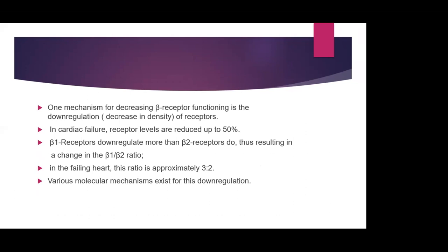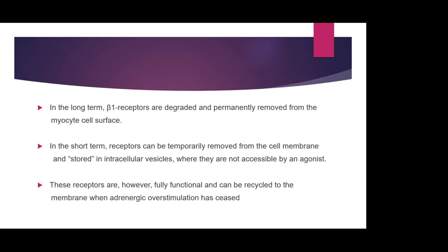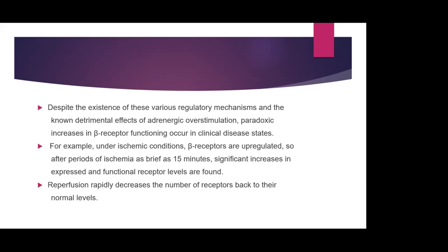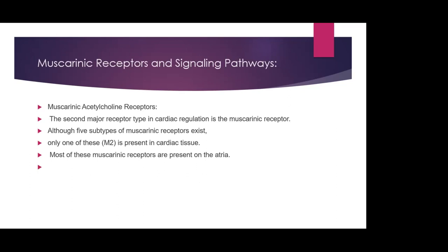Various molecular mechanisms exist for down-regulation of beta receptors. In the long term, beta receptors are degraded and permanently removed from myocyte cell surfaces. In the short term, they can be temporarily removed from the cell membrane and stored in intracellular vesicles where they are not accessible by agonists; these receptors are fully functional and can be recycled when adrenergic overstimulation ceases. Despite these regulatory mechanisms, paradoxical increases in beta receptor functioning occur in some clinical states. For example, in ischemia, beta receptors are upregulated — after 15 minutes of myocardial ischemia, significant increases in functional receptor levels are found. Reperfusion rapidly returns these numbers to normal levels.